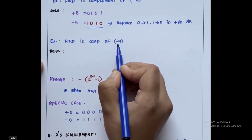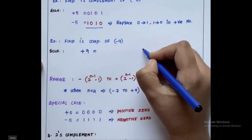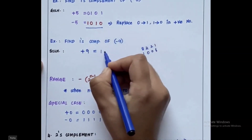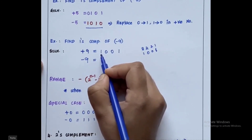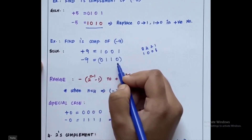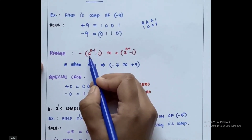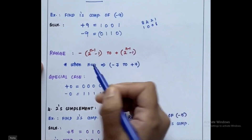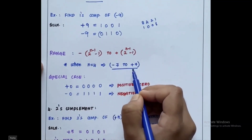Let us solve one more example: find the 1's complement of minus 9. First write plus 9 using the 8-4-2-1 technique — 8 plus 1 is 9, so it is 1001. To find the 1's complement of minus 9, replace 0's with 1 and 1's with 0, giving 0110. The range of 1's complement is minus 2^(n−1) − 1 to plus 2^(n−1) − 1, which for n equals 4 gives minus 7 to plus 7, similar to signed magnitude.